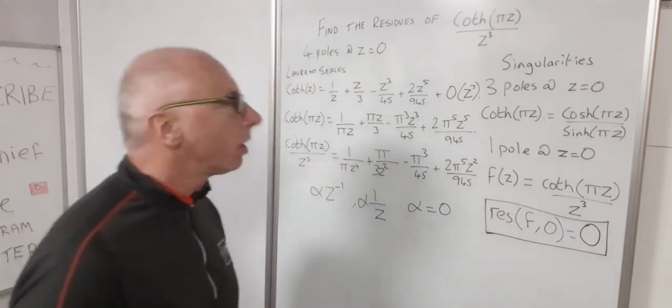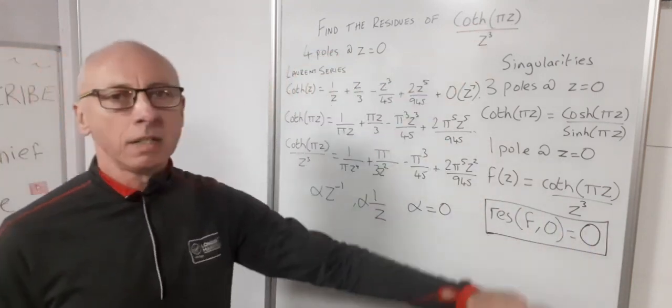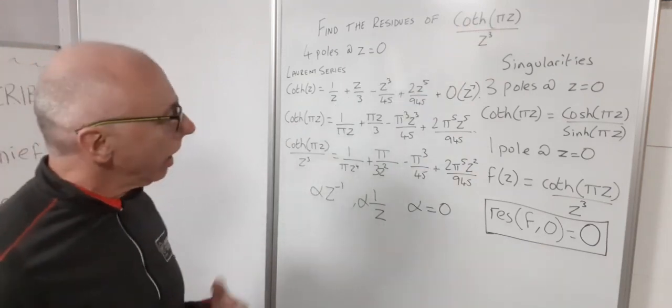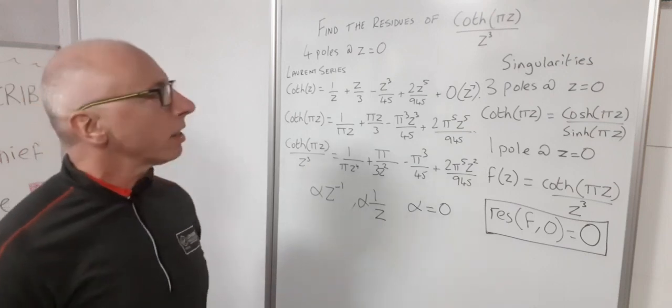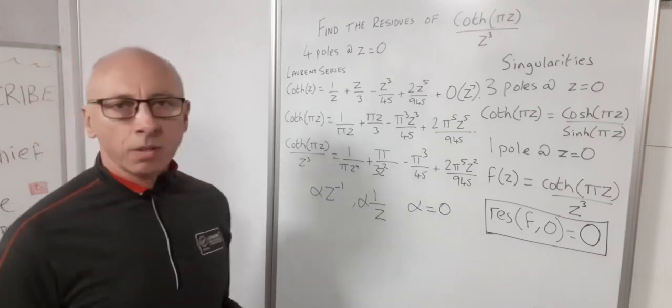That's our residue of hyperbolic cotangent function pi z divided by z cubed is zero. So if you want any more residue questions have a look in the link below. There's loads of them on this channel. So keep an eye out for those.